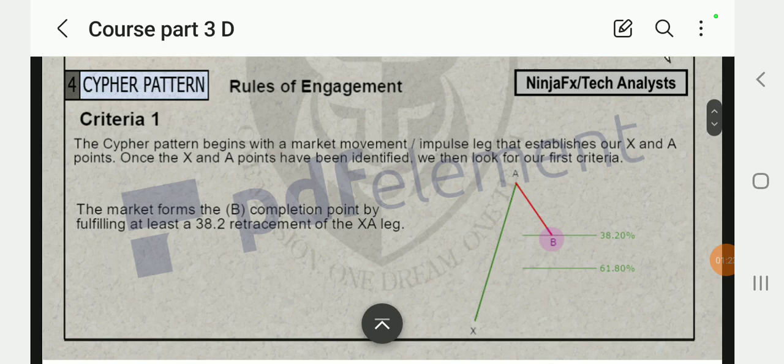Rules of engagement: The Cypher pattern begins with a market movement impulse leg that establishes X and A points. Once X and A points have been identified, we then look at our first criteria. The market forms the B completion point by fulfilling at least a 38.2 percent retracement of the XA leg.